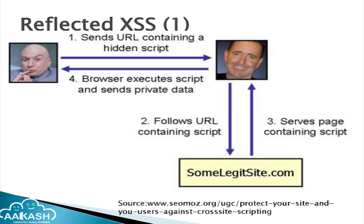You can view the diagram here. It clearly shows that the attacker will design a URL with a malicious code in one or more parameters of the URL and sends it to the victim through mail or some other source. When the victim receives this URL and clicks on it, a request will be sent to some legitimate site. The legitimate site may not be designed by security-aware developers, so due to improper validation of input, it processes the request and sends back the response. In the response, the malicious code embedded by the server — which they got from the request — will be executed onto the browser and it steals the private data and sends it to the attacker.